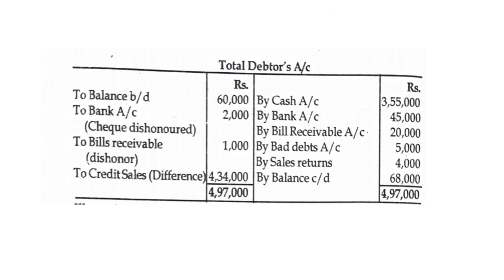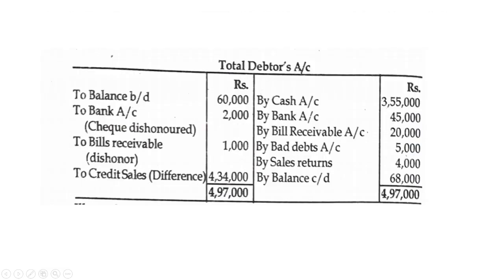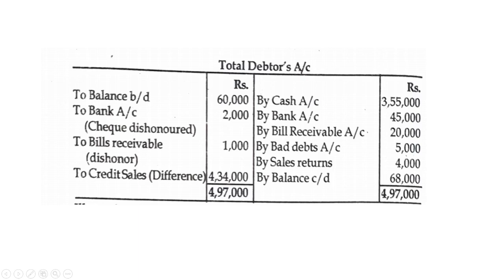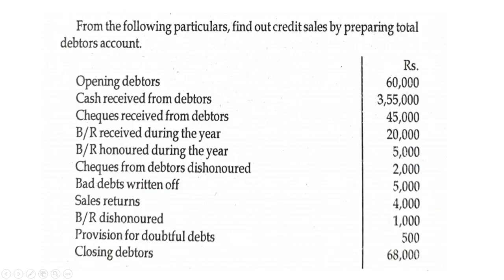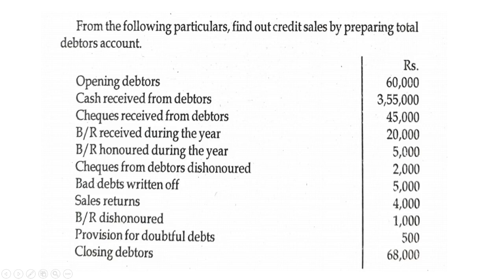Here is the total debtors account. The debit side starts with opening balance — balance brought down 60,000. Cash received from debtors: by cash account 3,55,000. Cheque received from debtors: by bank account 45,000. Bills receivable received during the year: by bills receivable account 20,000.